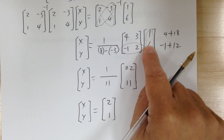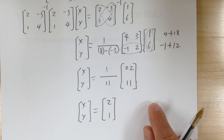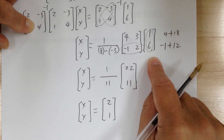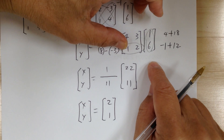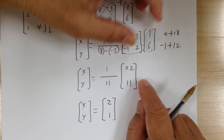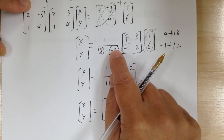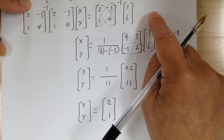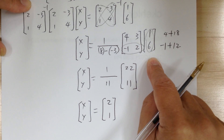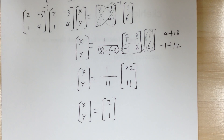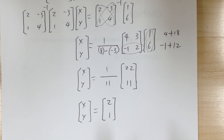That's how you use the inverse to solve a system of equations. Make sure you know how to multiply matrices — row times column, first number times first number plus second number times second number. The position of the result depends on which row and column you used.